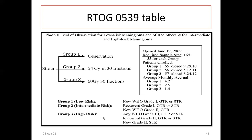Group 3 is high risk and includes any WHO grade 3 either GTR or STR, recurrent grade 2 GTR, and new grade 2 STR. For treatment: group 1 low risk — observation; group 2 — 54 Gy in 30 fractions; group 3 — 60 Gy in 30 fractions.